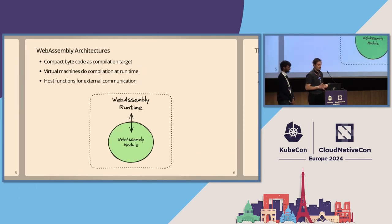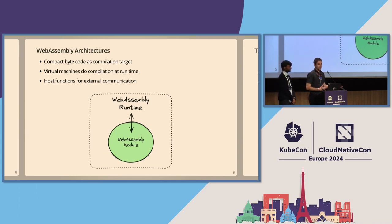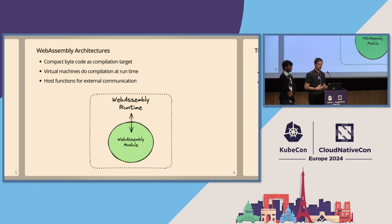WebAssembly originated in the browser. It's bytecode that is executed by a virtual machine. The VM is also referred to as the host or the runtime. By default, WebAssembly is purely just memory and compute, but the runtime can expose functions to the guest module — and those are called host functions.